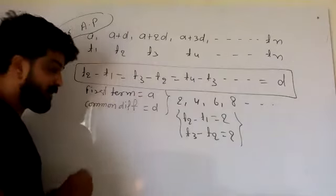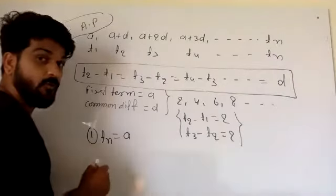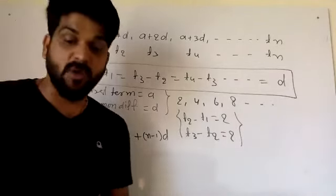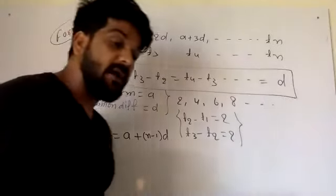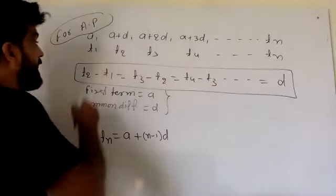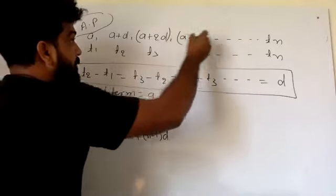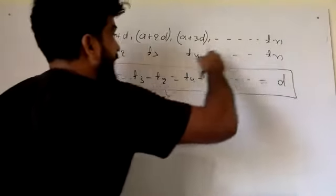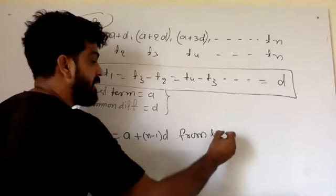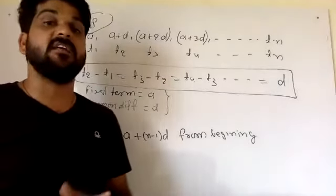We have the first formula: TN. What does TN mean? TN is the Nth term, and it equals A plus (N minus 1) into D. This is where A is the first term and D is the common difference. So T1 is A, T2 is A plus D, T3 is A plus 2D, T4 is A plus 3D. The general term TN equals A plus (N minus 1) into D. This is formula number one — from the beginning.